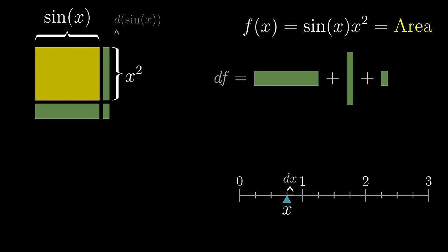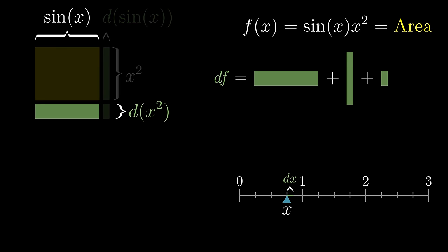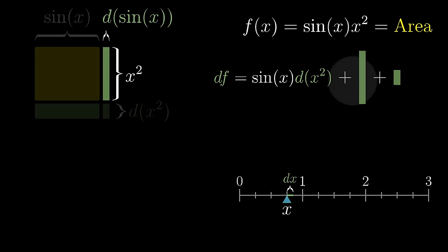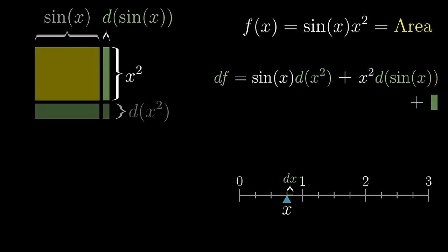Well, the nudge dx caused that width to change by some small d sine of x, and it caused that height to change by some d x squared. And this gives us three little snippets of new area: a thin rectangle on the bottom whose area is its width, sine of x, times its thin height, d x squared, and there's this thin rectangle on the right whose area is its height, x squared, times its thin little width, d sine of x. And there's also this little bit in the corner, but we can ignore that. Its area is ultimately going to be proportional to dx squared, and as we've seen before, that becomes negligible as dx goes to 0.